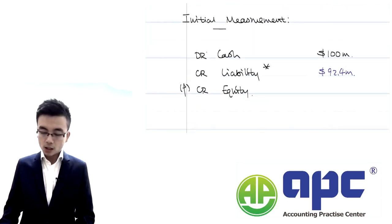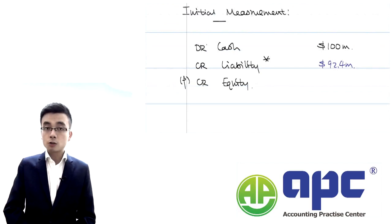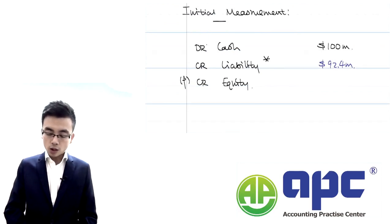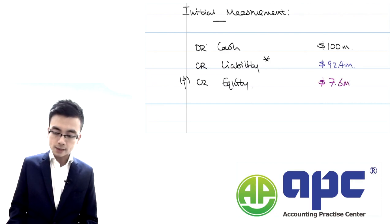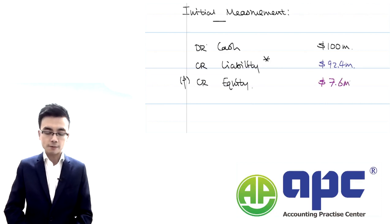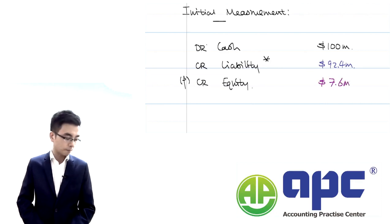For the equity element: $100 million minus $92.4 million gives $7.6 million as the balancing figure for equity. That's how we complete the initial measurements.